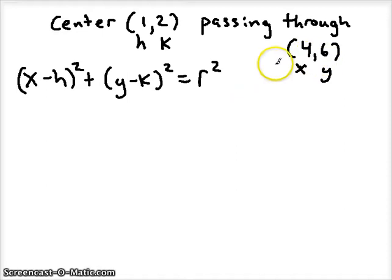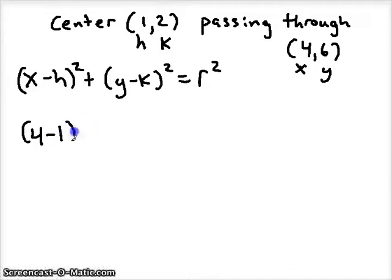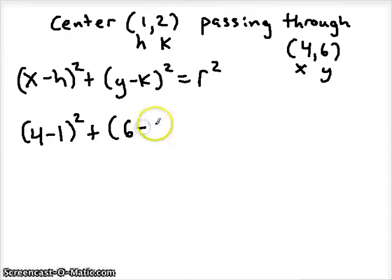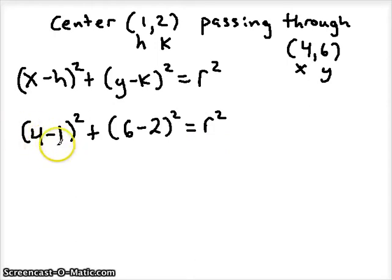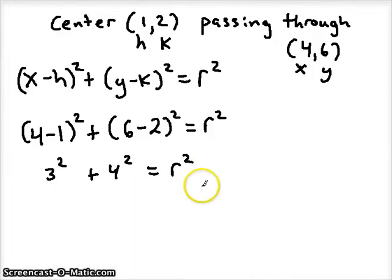Our X value is 4 and our H value is 1, so we have 4 minus 1 squared. Then our Y value is 6 and our K value is 2 — square that and it equals R squared. So as you can see we're missing the radius value. We can solve for it by simplifying: 4 minus 1 is 3, we'll square that; 6 minus 2 is 4, we'll square that. That's going to give us R squared.